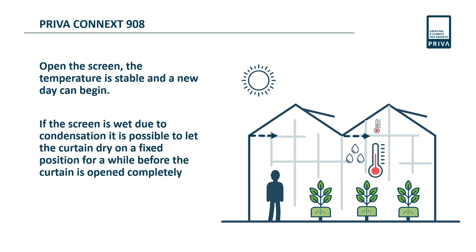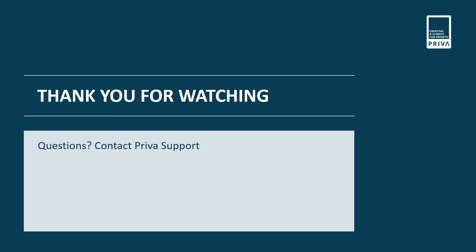If the temperature above the screen is high enough, we can open the screen without having any effect on the greenhouse temperature. If the screen is wet due to condensation, it is possible to let the curtain dry on a fixed position for a while before the curtain is opened completely.